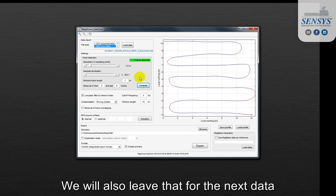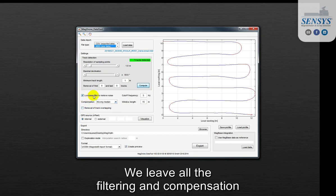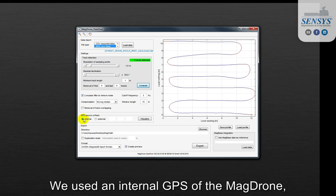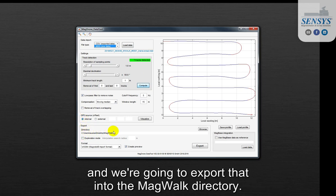We will also leave that for the next data that we are going to import. We leave all the filtering and compensation with the standard values. We used an internal GPS of the MacDrone and we are going to export that into the MacWalk directory.